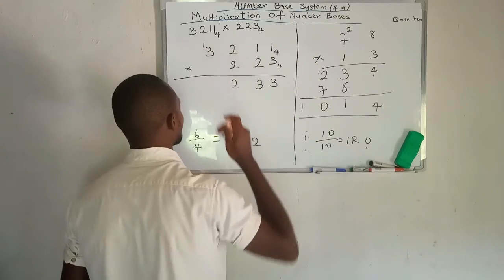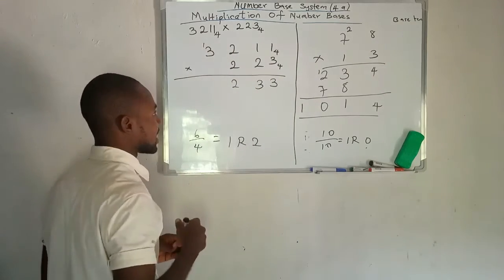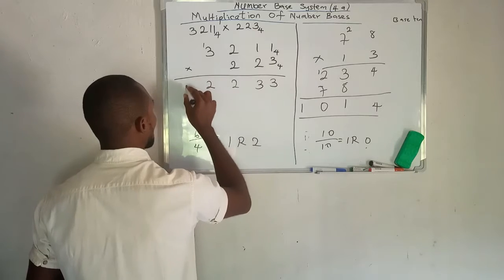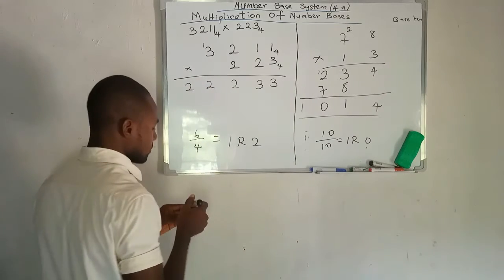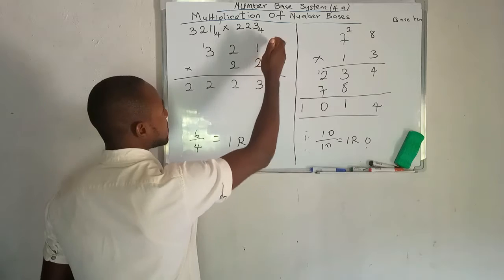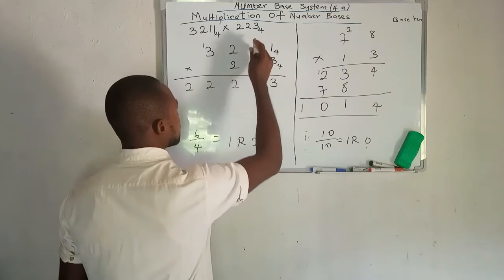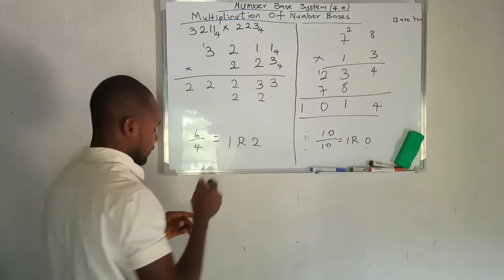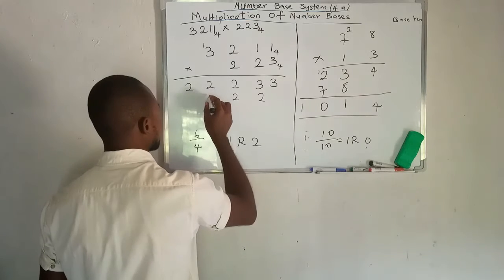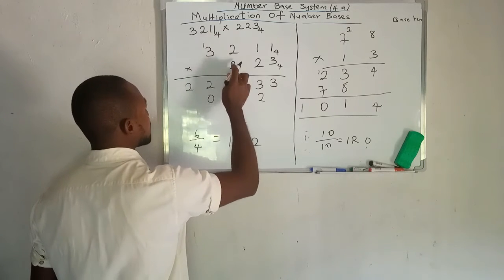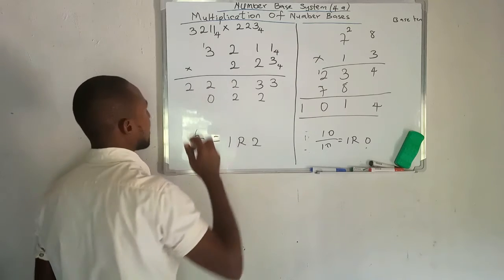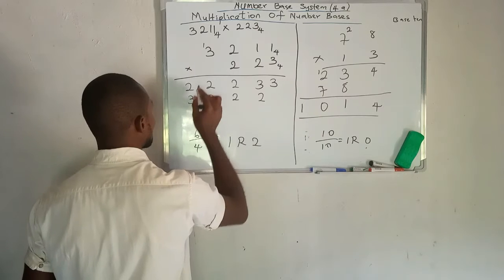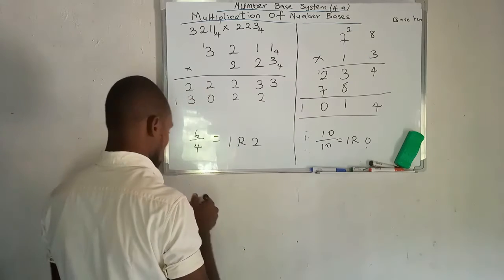So we have 3 times 3, which is 9, plus 1 carried over, giving 10. And 10 divided by 4 gives 2 remainder 2. So we write 2 here. Now multiplying with the next digit, we have 2 times 1, which is 2. Then 2 times 2 is 4. 4 divided by 4 gives 1 remainder 0. So we write 0 here and take 1 to the next place. Then 2 times 3 is 6, plus 1 is 7. And 7 divided by 4 gives 1 remainder 3. So we write 3 here and 1 in the next place.